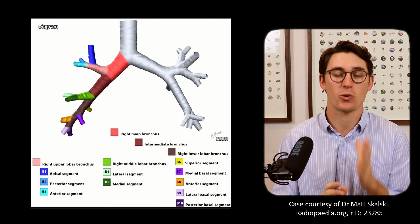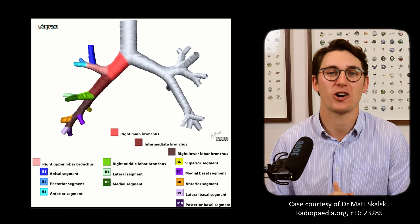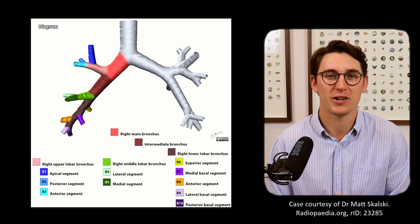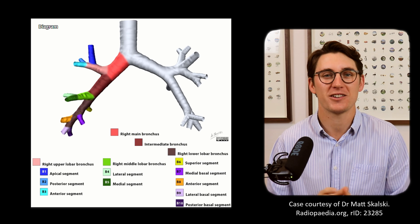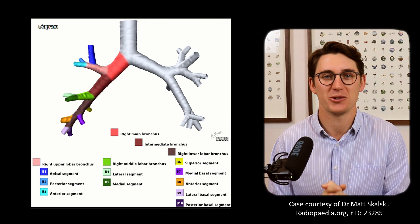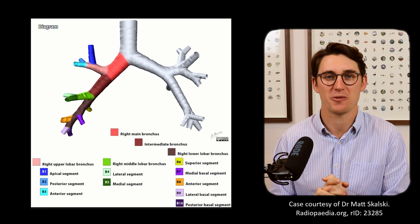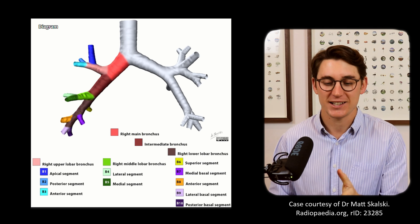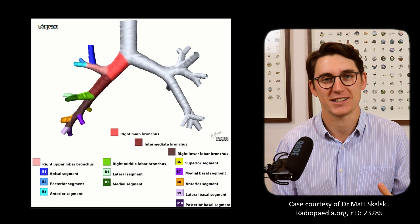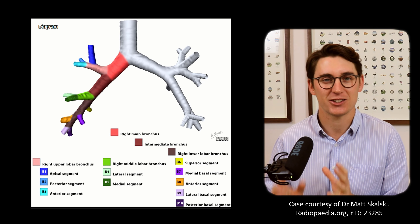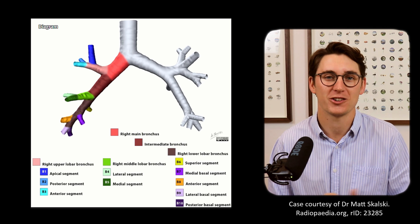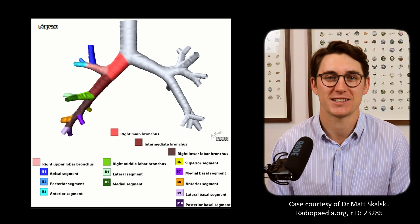This was requested by someone in the comments below — a reminder that if you're struggling with a specific topic, post it down in the comments and I'll try my best to get a video out as soon as possible. So let's have a look at this diagram. We're going to start by looking at the right hand side of the lung, then see the subtle changes on the left before heading on to a CT scan.